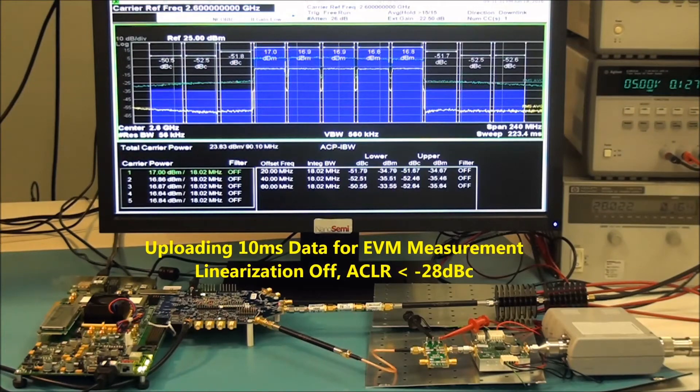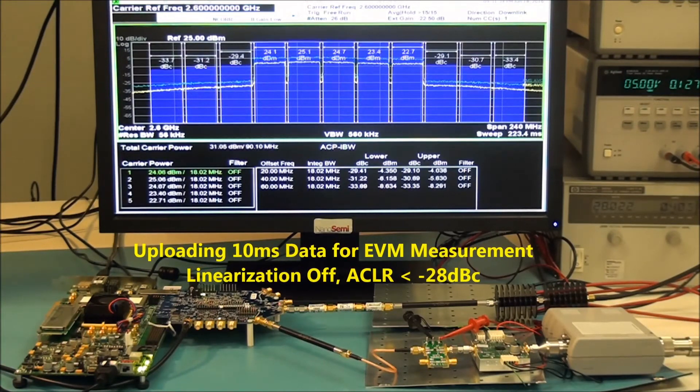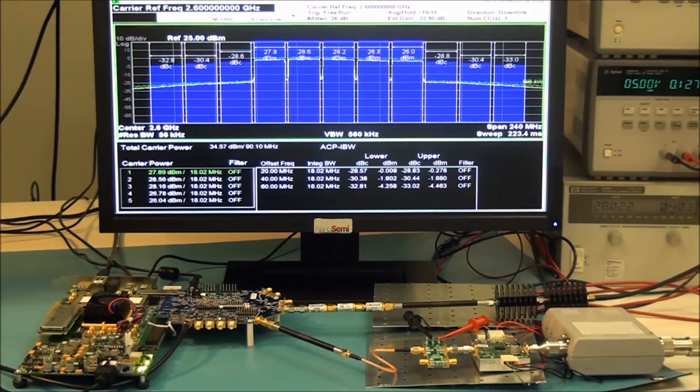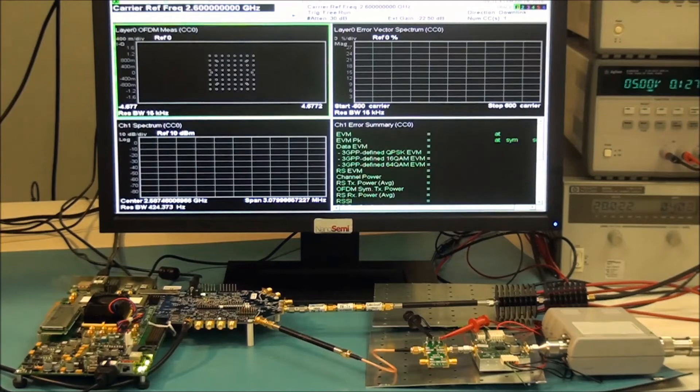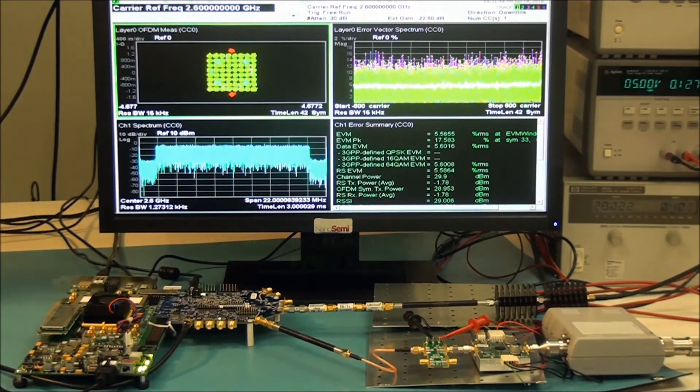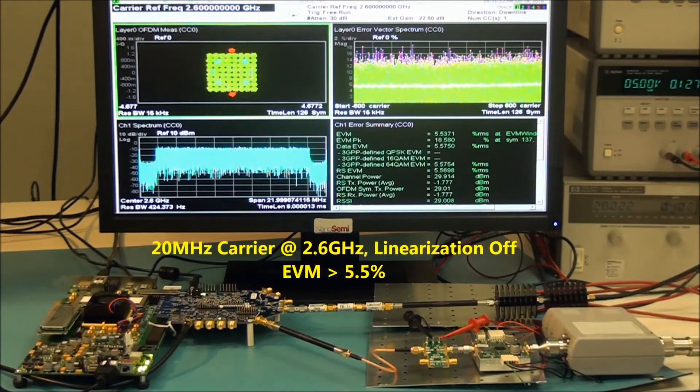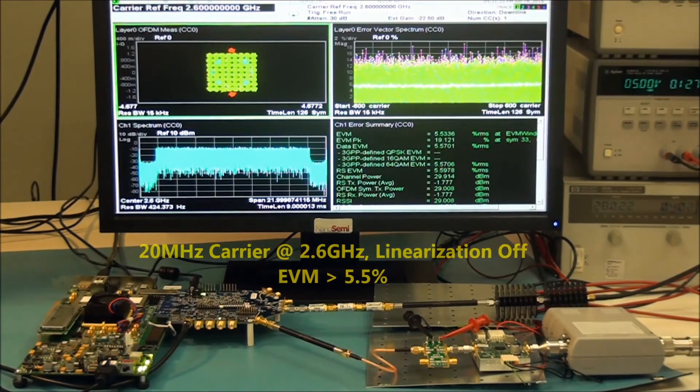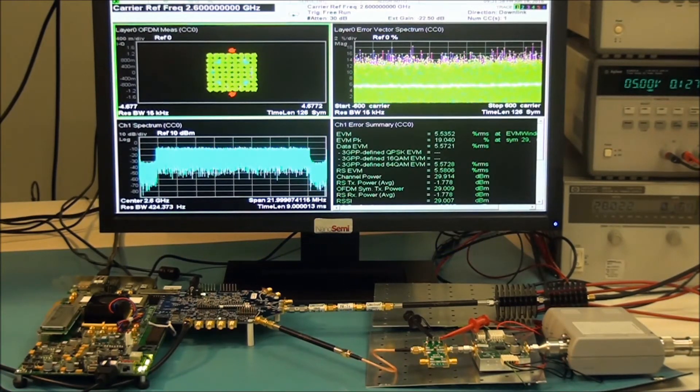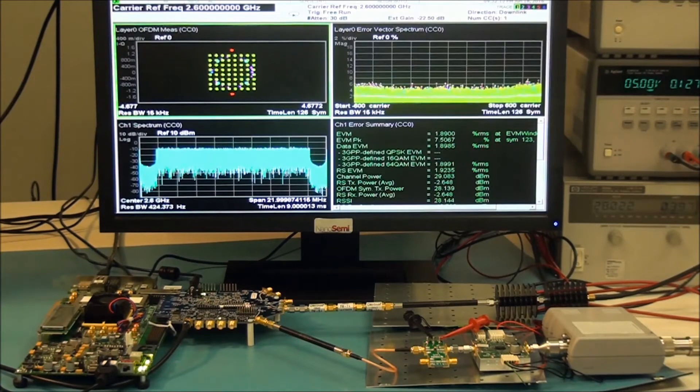Next, we are uploading a full radio frame 10 ms data for EVM measurement. A typical data EVM without corrections is between 5 and 6%. Since there are five 20 MHz carriers, we will be looking at the center carrier which is located at 2.6 GHz.